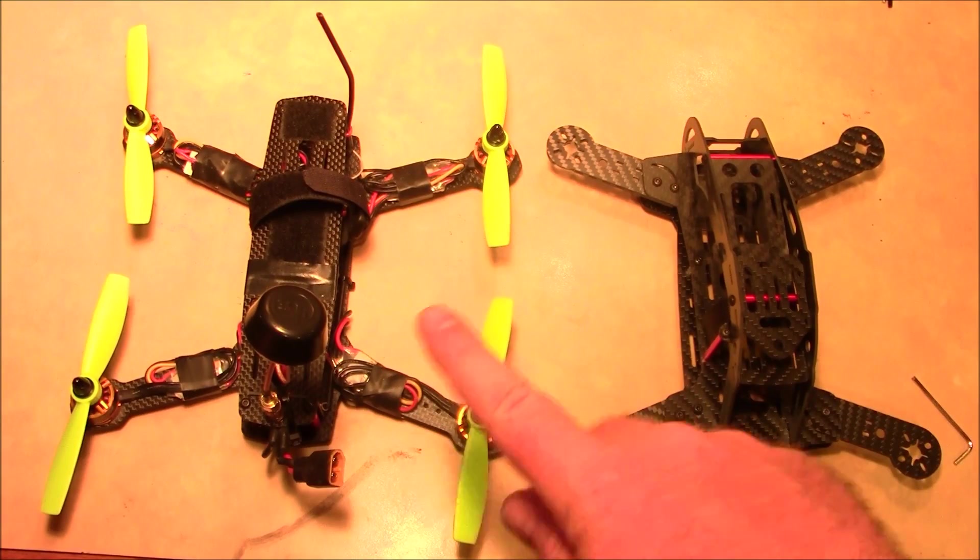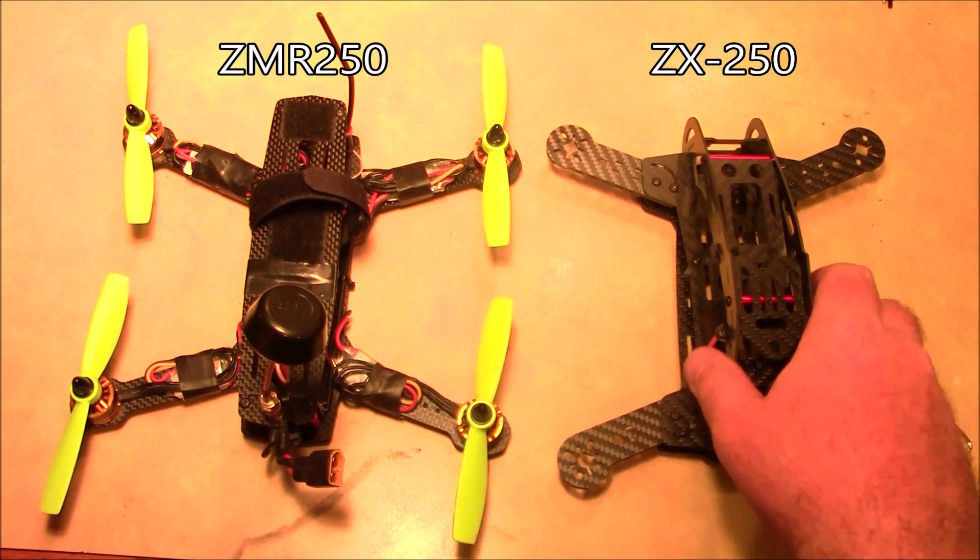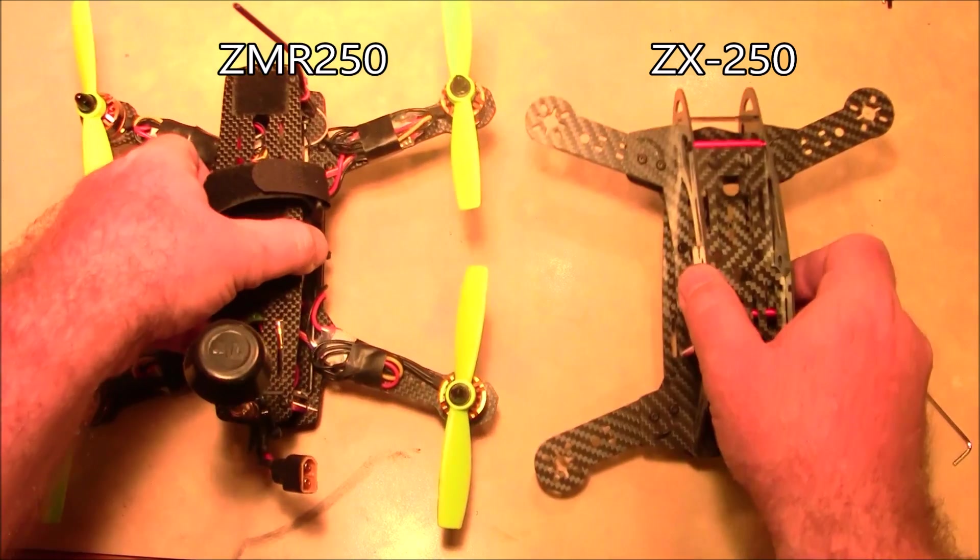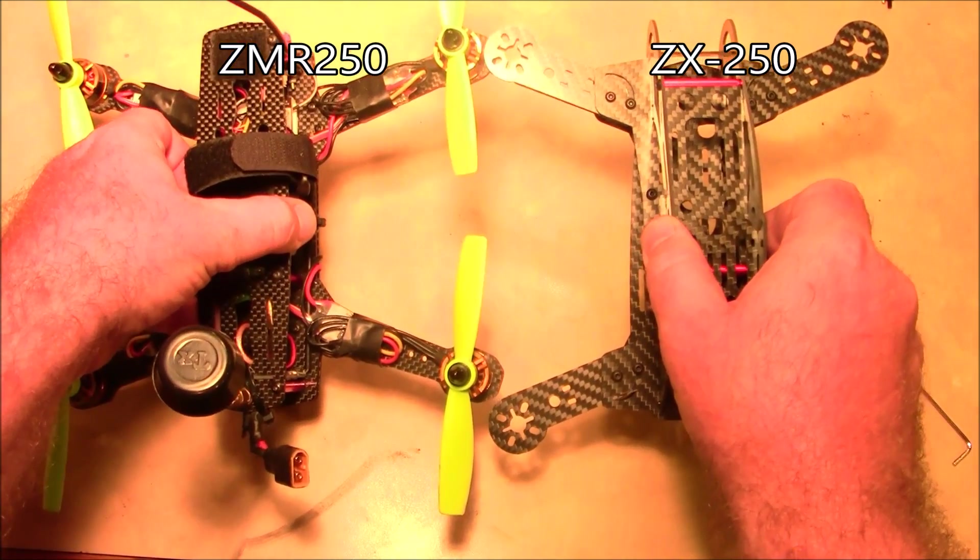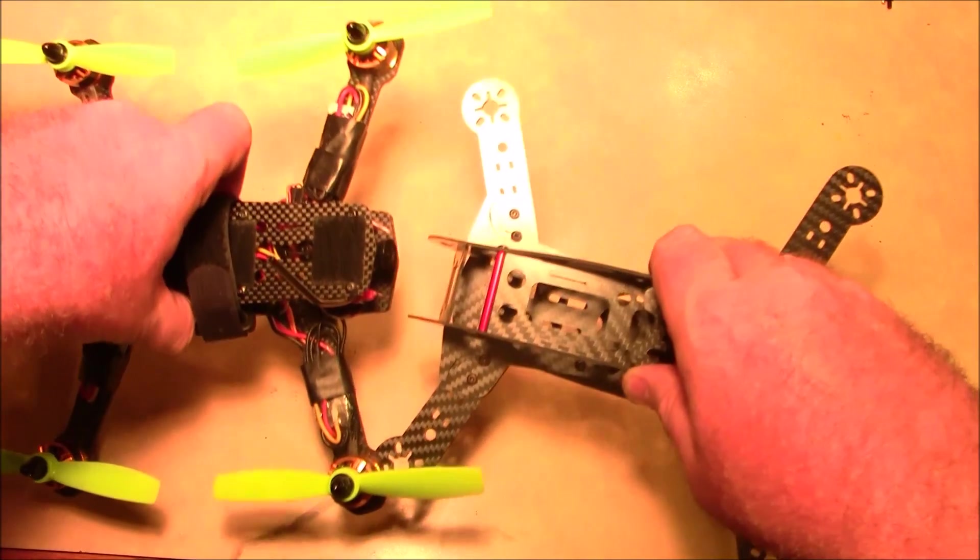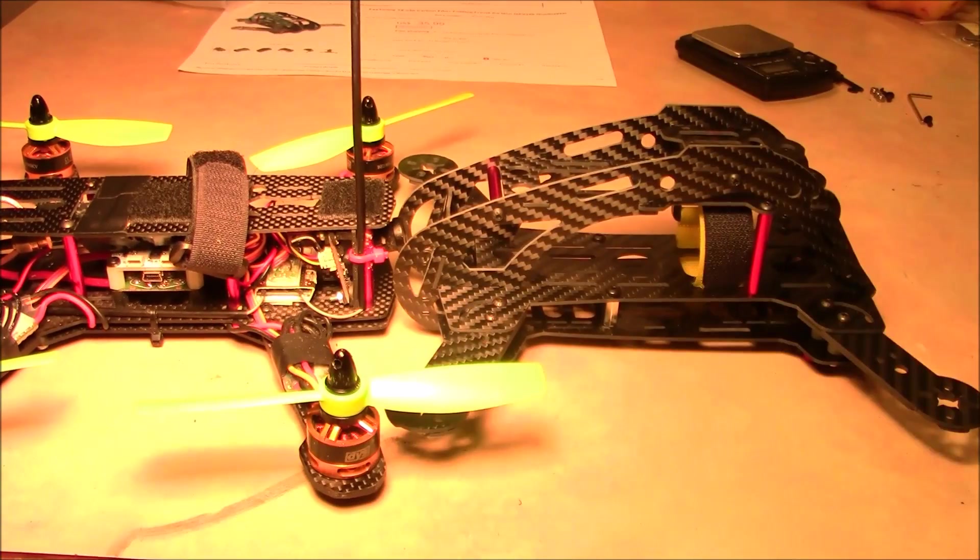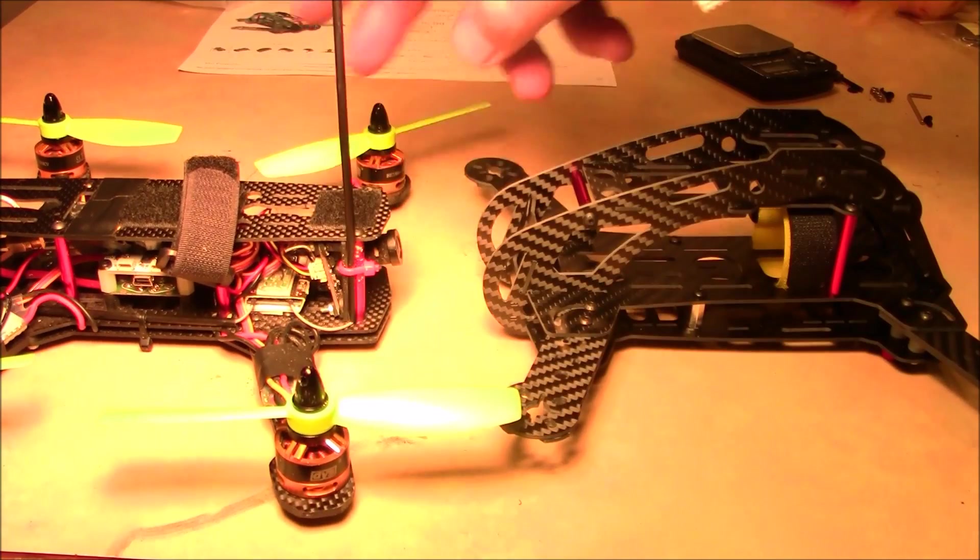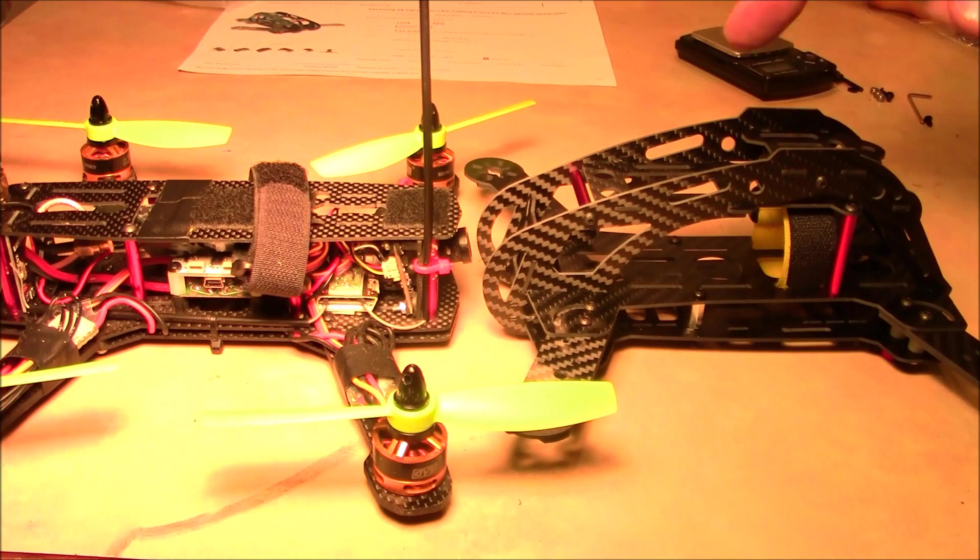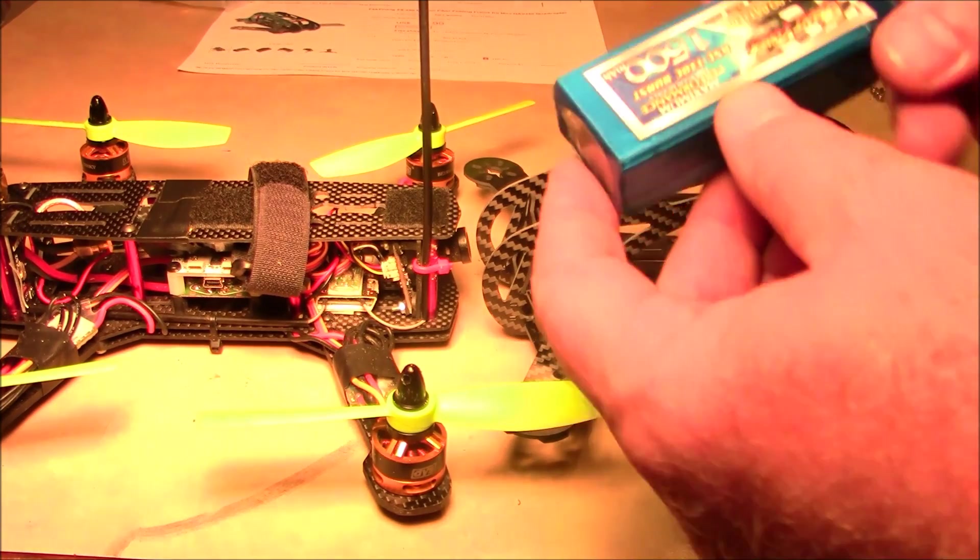So here's my ZMR 250 and the ZX 250 just for a little size comparison. The front to back arms are a little bit longer on the ZX and going sideways, the ZMR 250 is a little bit wider. There is a little bit of height difference between the ZMR 250 and the ZX 250.